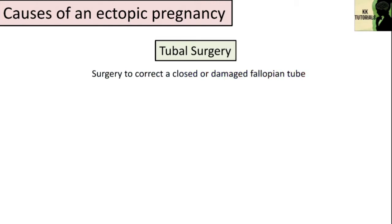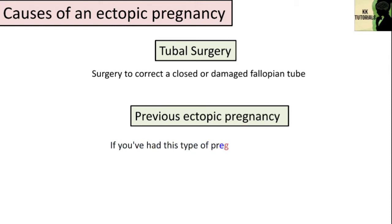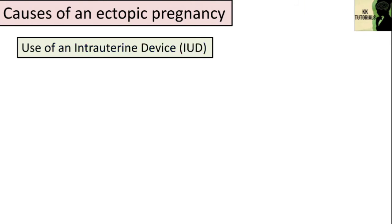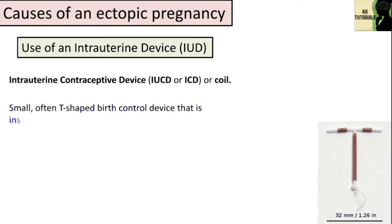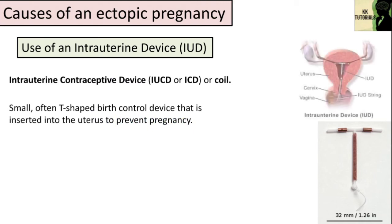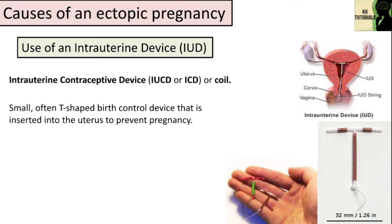Tubal surgery is another risk factor — surgery to correct a closed or damaged fallopian tube can increase the risk of ectopic pregnancy. A previous ectopic pregnancy also raises risk; if you have had one before, you are more likely to have another. Use of an intrauterine device (IUD), also known as IUCD or coil — a small T-shaped birth control device inserted into the uterus — can also be a risk factor. A small probability of pregnancy remains after IUD insertion, and when it occurs there is a greater risk of ectopic pregnancy. If you do get pregnant with an IUD in place, it is more likely to be ectopic.